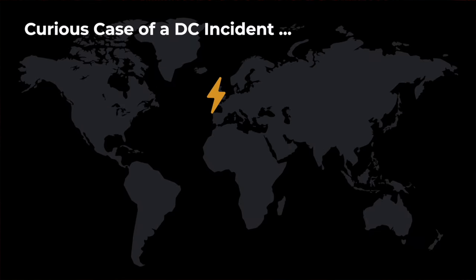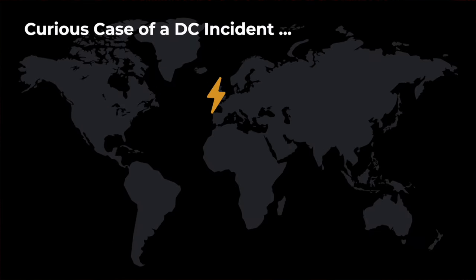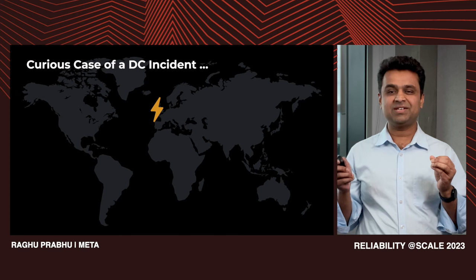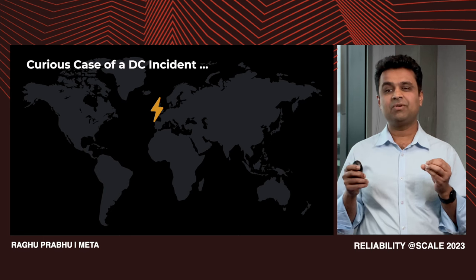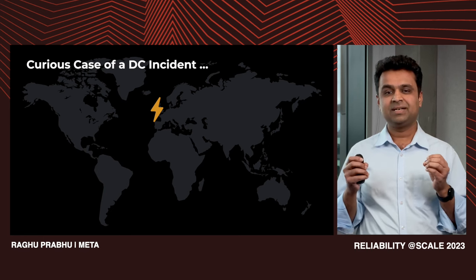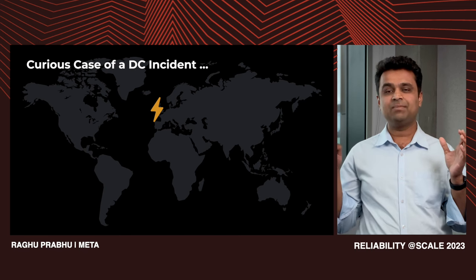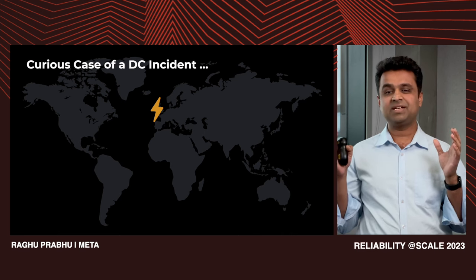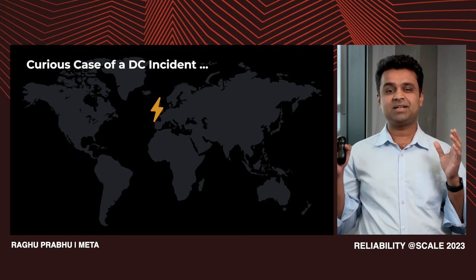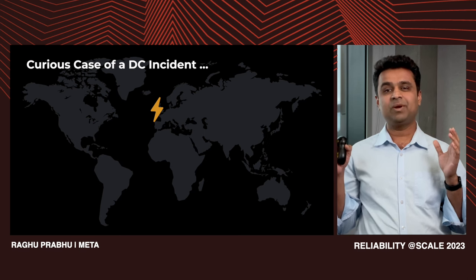Let's look into one such risk encountered. This all started in the winter of 2022 with a curious case of a DC incident. One of our critical European data centers was at risk of load shedding, also known as demand curtailment from our grid provider. In the worst case, we were looking at uncontrolled power loss of the data center. The risk spanned over an unbounded period of time, lasting over peak consumption hours each day and potentially over multiple weeks. Complete regional shutdown had not been exercised in our disaster readiness exercises in the past, and we had limited time to prepare — entering uncharted territory.